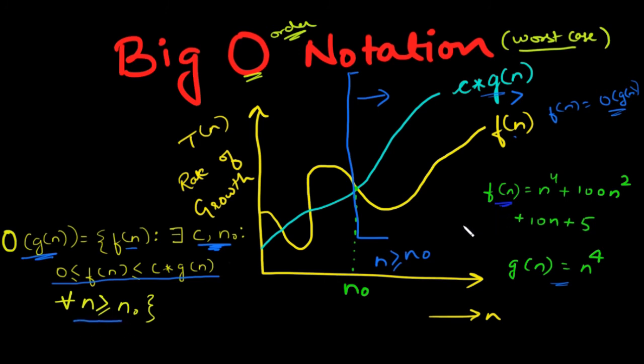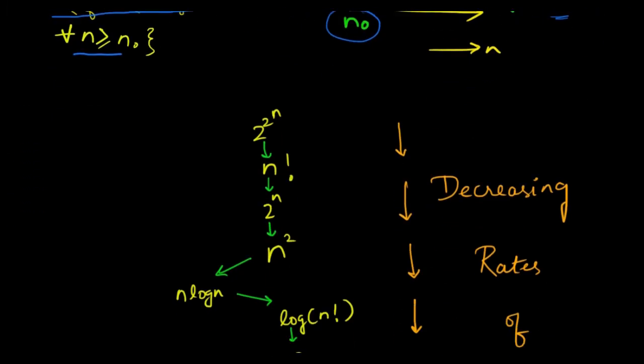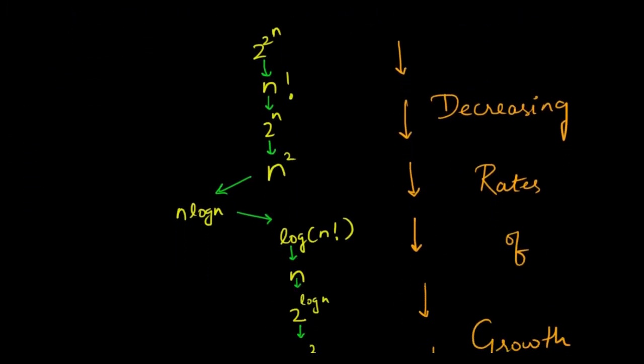Here n₀ is the threshold value. What you're looking on your screen right now are different rates of growth in decreasing order.